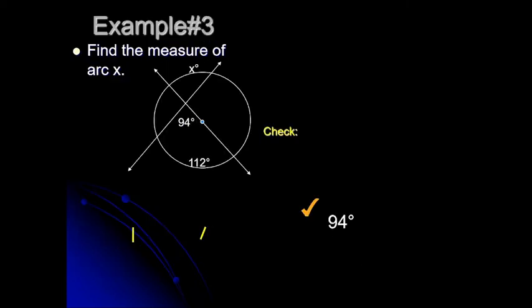For Example 3, we reverse the process but still use Theorem 1, because two secants are intersecting inside the circle. Notice that one of the arc measures is missing.